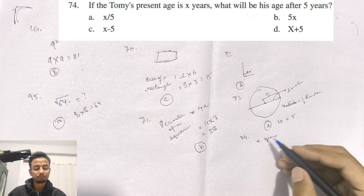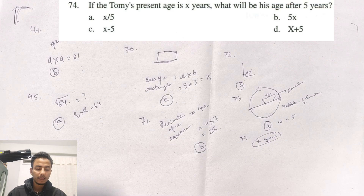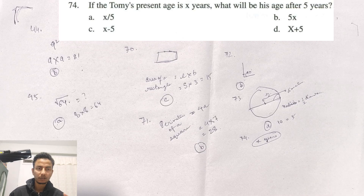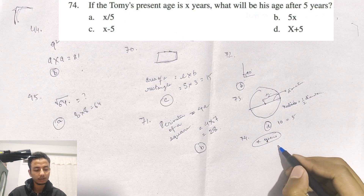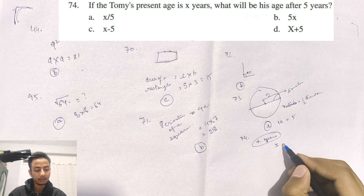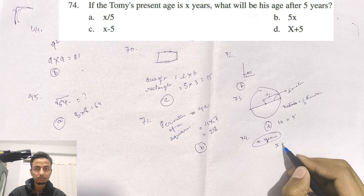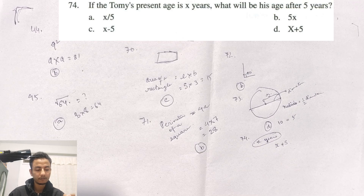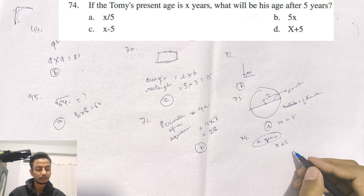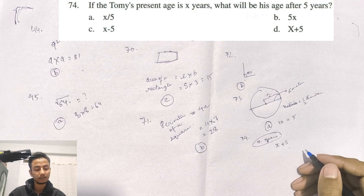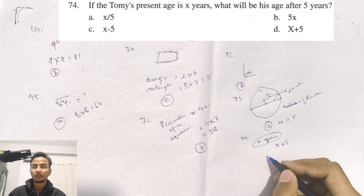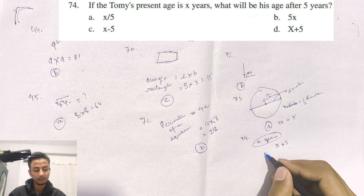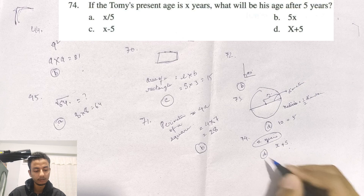After 5 years, you add 5 to the present age. So the answer is X plus 5. The correct answer is D for question 74.